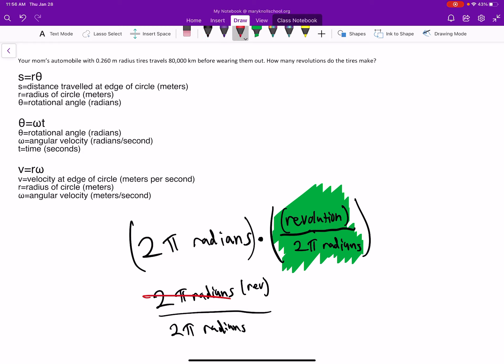So we get 2π radians times revolution divided by 2π radians. This cancels with this, and you can see that they went 1 because there's always a 1 out front - 1 revolution. Now let's go ahead and get to the problem.